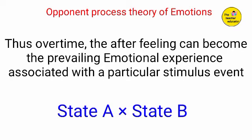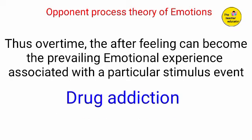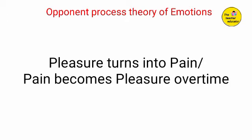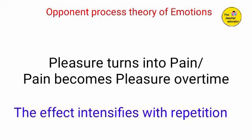One of the best examples is drug addiction. The state A of emotion is pleasure. The state B, the opposite, is pain — withdrawal syndrome and depression. That means pleasure turns into pain, or pain becomes pleasure. The effect intensifies with repetition.